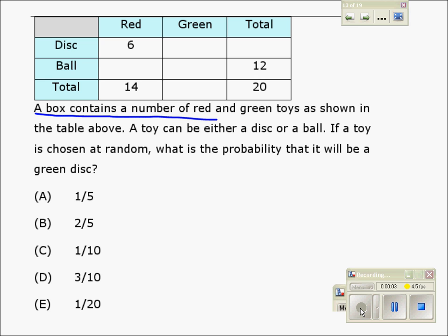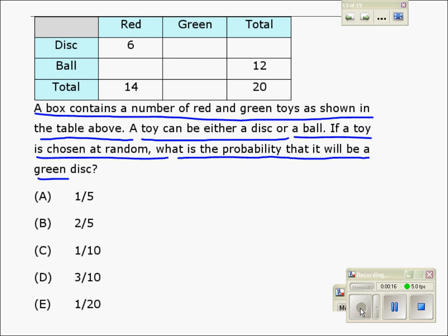A box contains a number of red and green toys as shown in the table above. A toy can be either a disc or a ball. If a toy is chosen at random, what is the probability that it will be a green disc?